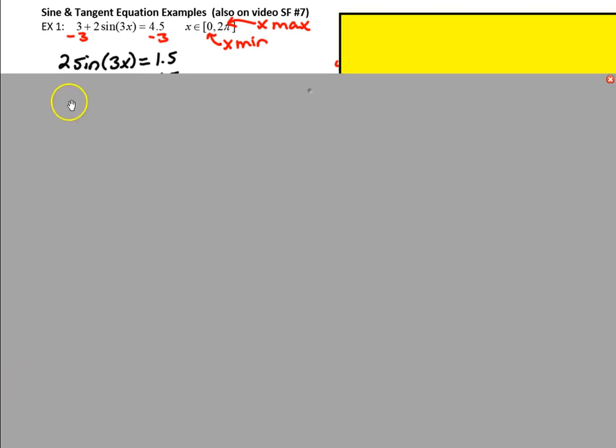So here we have a sine equation: 3 plus 2 sine of the quantity 3x equals 4.5. We're solving for values that are between 0 and 2π or 0 and about 6.28. So all of our solutions have to be in that range. Later on when we make the graph, we're going to use 0 as our minimum x value and 2π as our maximum x value.